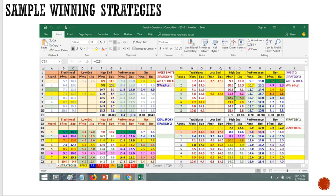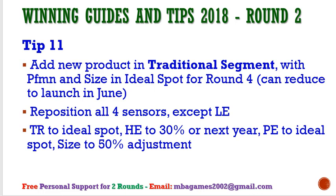Coming back to Round 2 — if you followed Round 1 correctly, great; if not, this is your second chance to get the right strategy. Rounds 1 and 2 are very important because if you don't follow the right decisions from the beginning, it takes one to three rounds to fix problems. You'll have no chance to compete with others who already have better products, better factories, and higher margins due to good automation. From Round 3, you can control the game by following similar decisions.